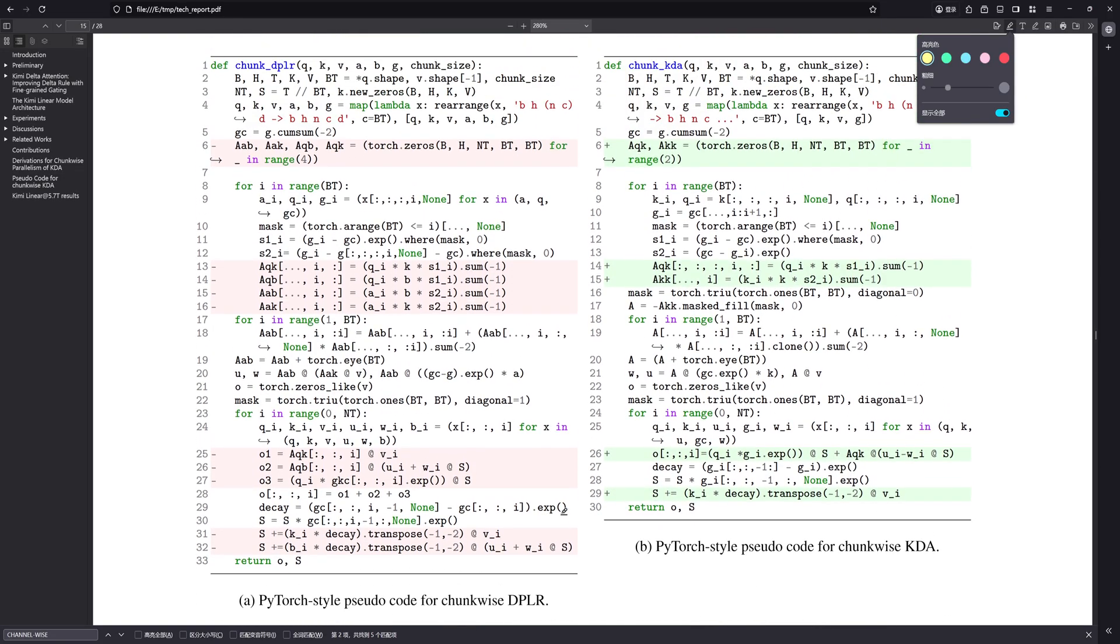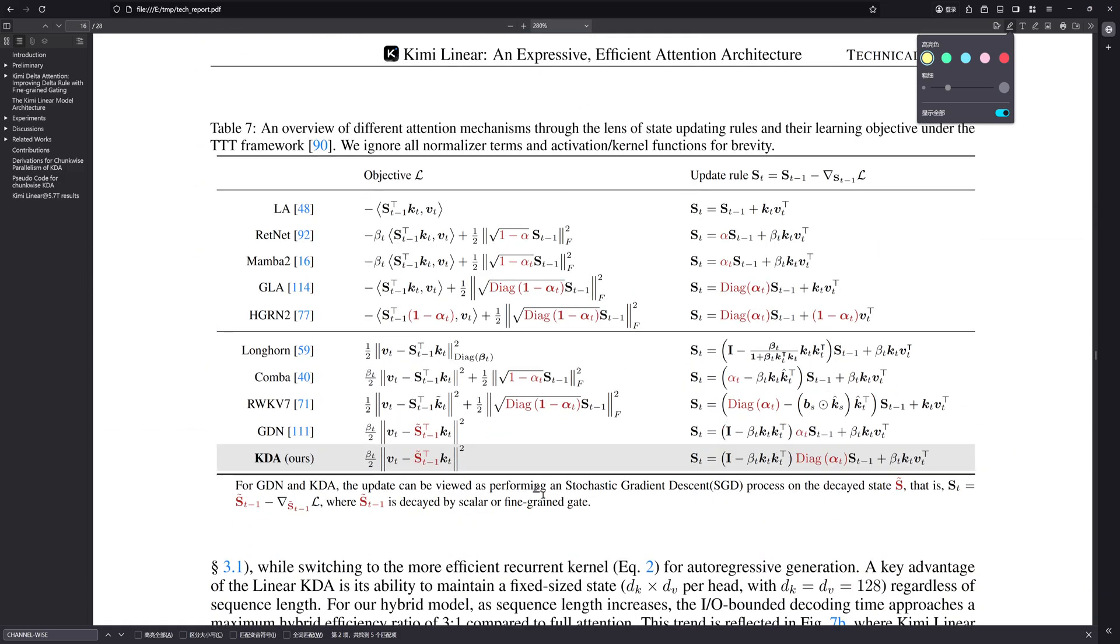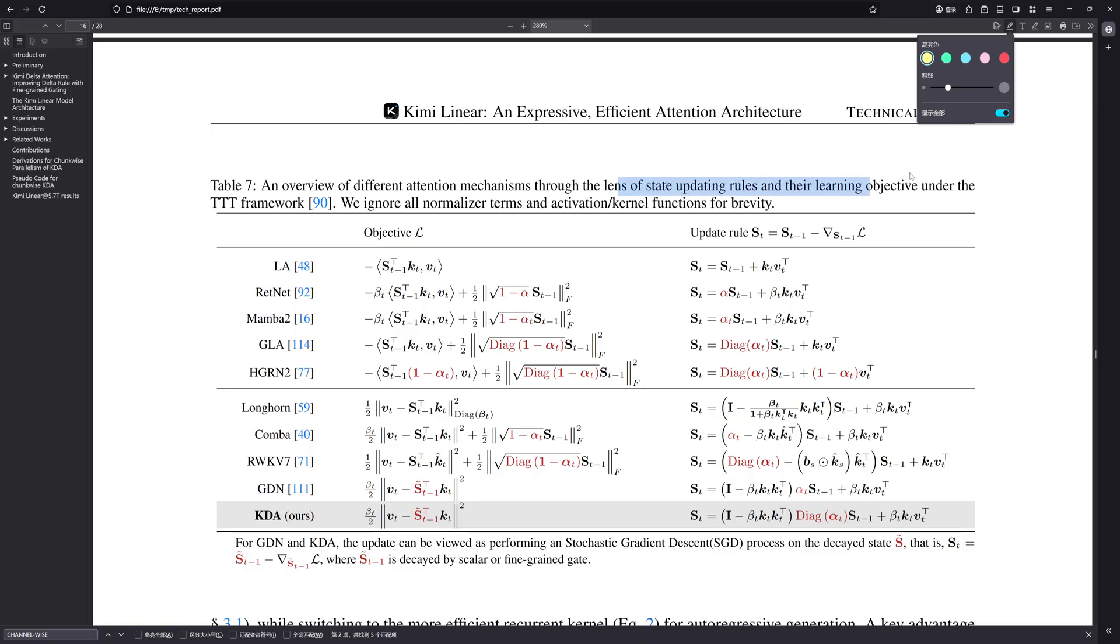And one last point, we need to look beyond just perplexity scaling curves. Kimi Linear demonstrates superior learning dynamics, particularly later in the training pipeline. Yes, it outperforms MLA baselines in pre-training and SFT, but the really convincing part for me is the reinforcement learning phase. The data shows it improves faster and reaches higher scores on tough reasoning benchmarks like Math 500 and AIME 2025 during RL. That suggests something deeper is happening, a genuine improvement in memory and reasoning capabilities enabled by KDA, not just to speed up allowing more trial and error. It learns better.